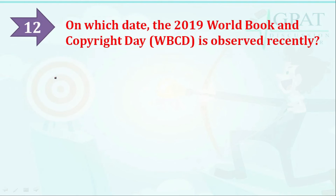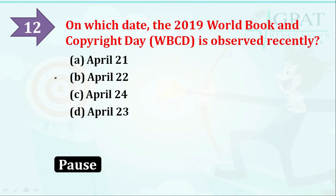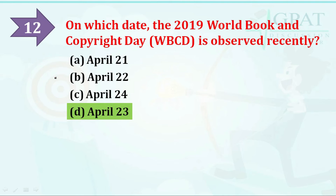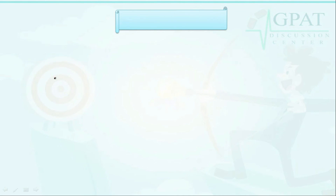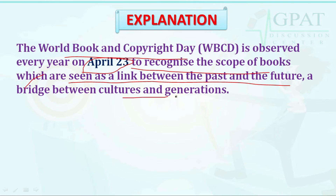The next question: on which date is the 2019 World Book and Copyright Day (WBCD) observed? Options are: option A: April 21, option B: April 22, option C: April 24, option D: April 23. The correct answer is April 23. The World Book and Copyright Day is observed on April 23 to recognize the scope of books as a link between the past and future and a bridge between cultures and generations.